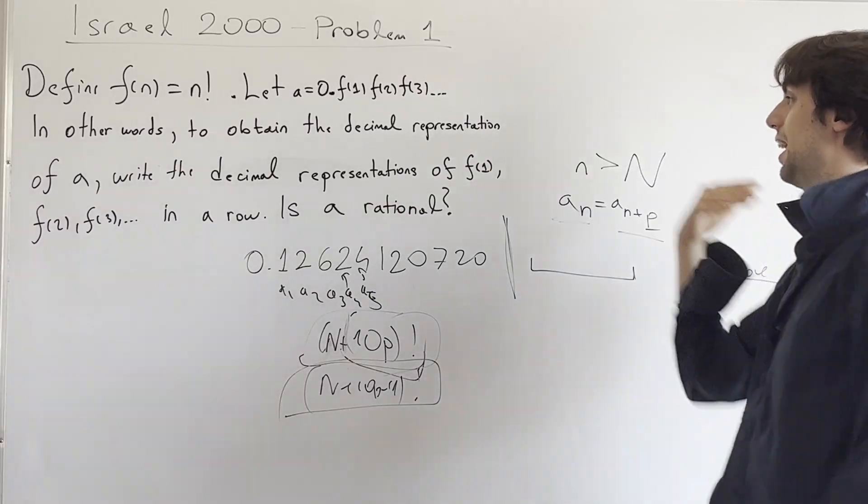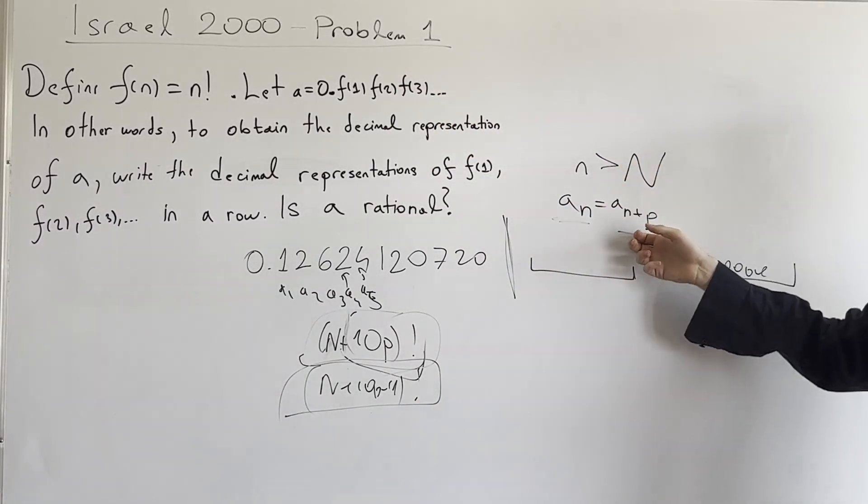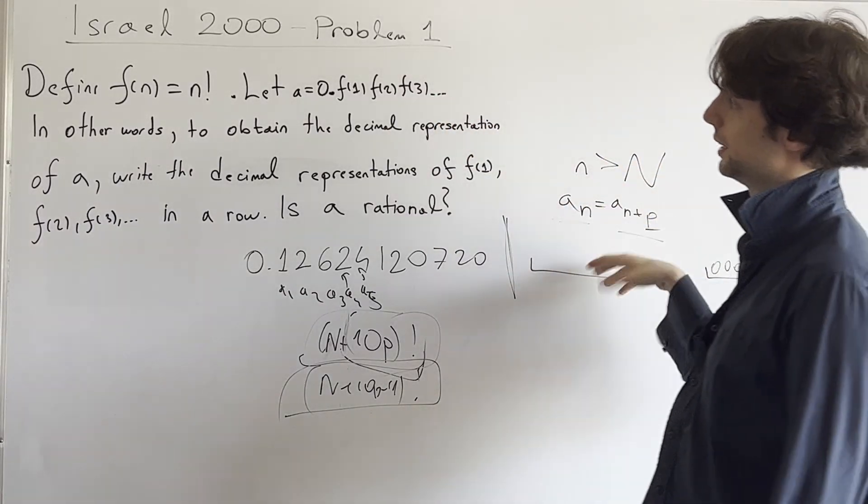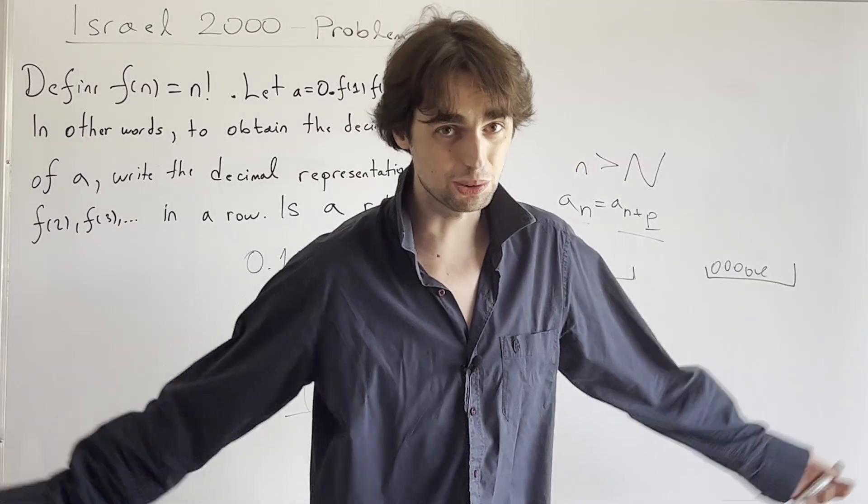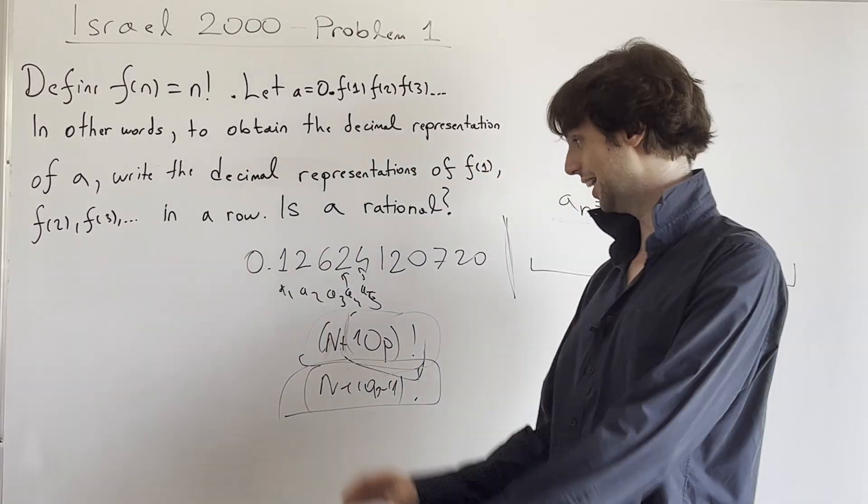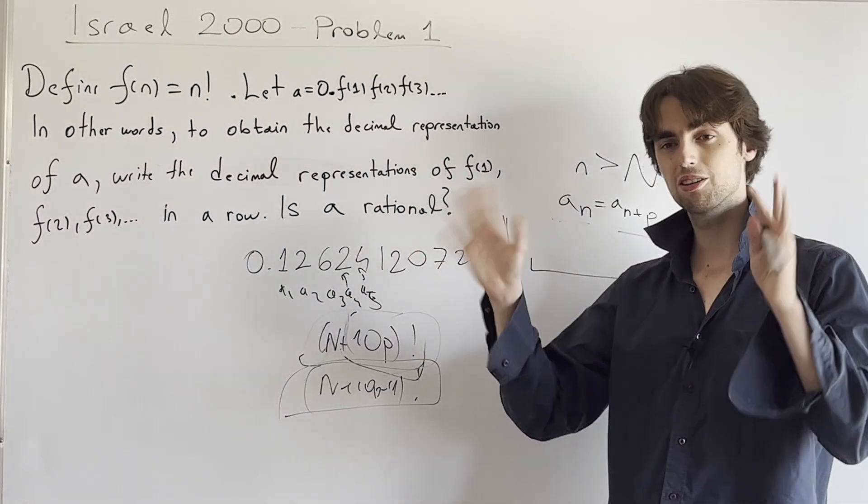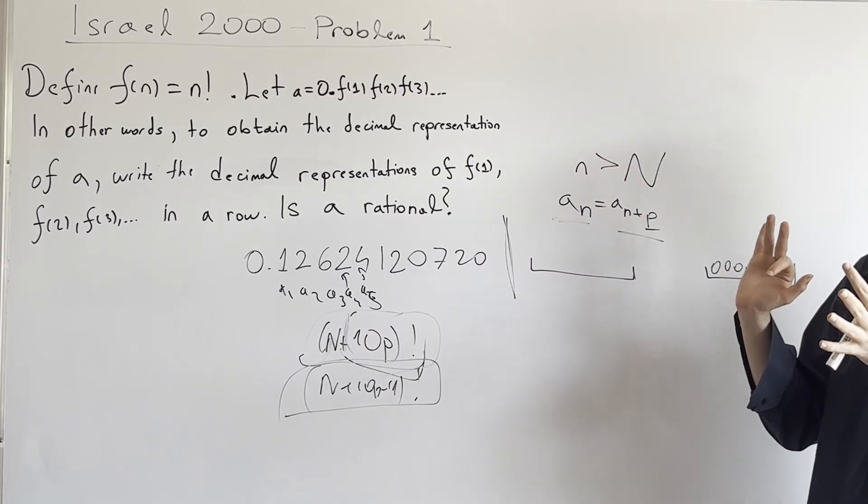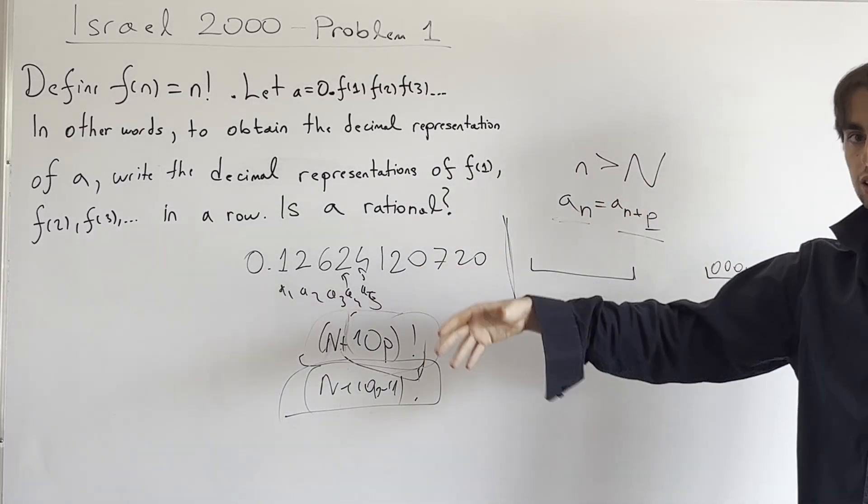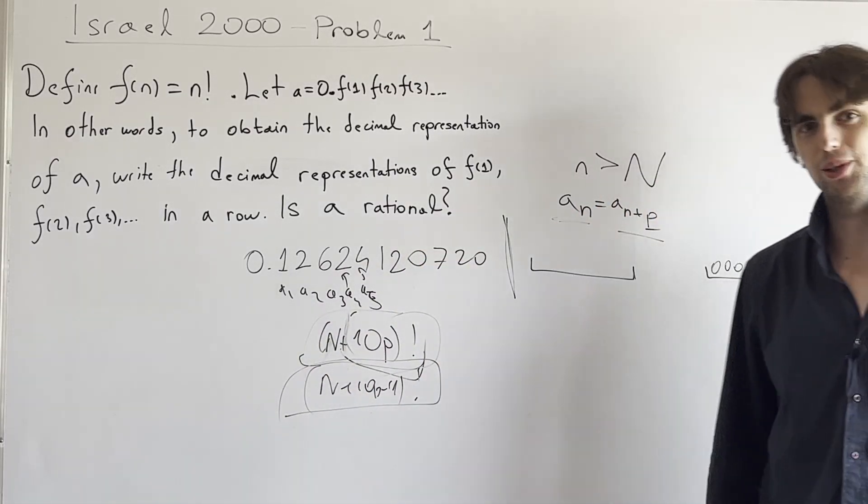So we cannot have a period starting from some N, which means that A is irrational, and this solves our problem. And I thought it was just like a cool little thing for you to see how to deal with things which seem distant, and also a cool little problem from Israel.